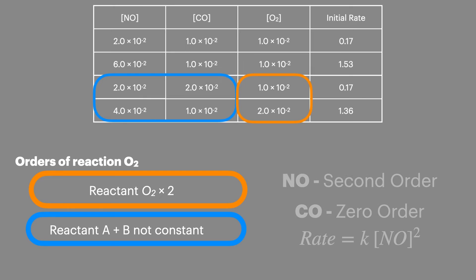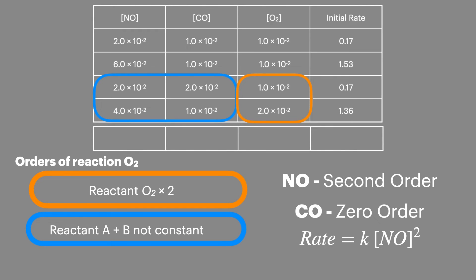Now comes a slightly more tricky part — looking at the order of reaction for oxygen. We can identify where O₂ doubles but there is no constant for NO or CO. So what we'll do is use what we've already learned: NO is second order and CO is zero order, to create an additional row of the table. With this additional row we're aiming to create two lines of data where we keep the concentrations of NO and CO the same to allow a comparison of the change of O₂. I'll take the data from row 3 and adjust it slightly so I can compare it with row 4. I've taken the concentration of NO at 2×10⁻² and doubled it to 4×10⁻², and also halved the concentration of CO while keeping O₂ the same. Because CO is zero order, halving its concentration will have no impact on the initial rate. But because I've doubled the concentration of NO which is second order, I'll need to multiply the initial rate by 4, which allows me to calculate an initial rate value for comparison against my fourth row of the table.